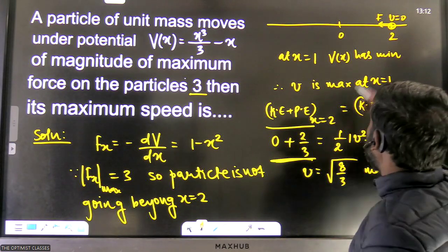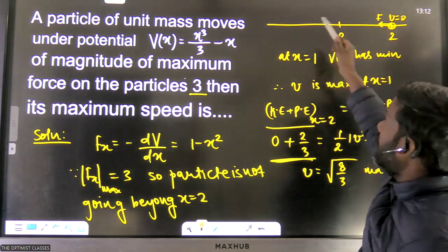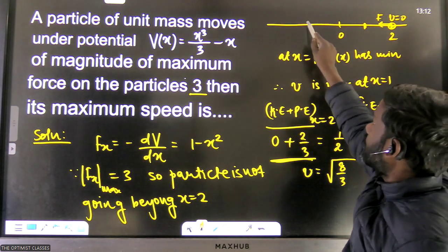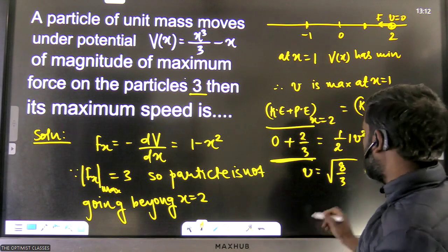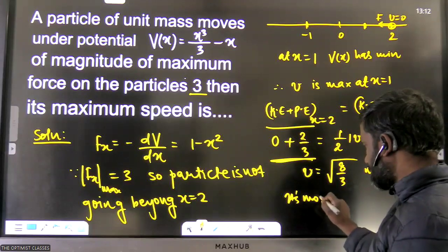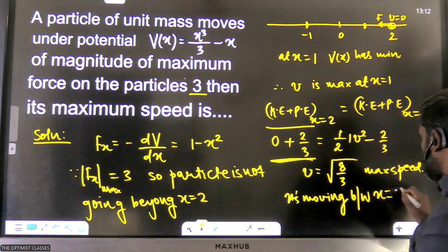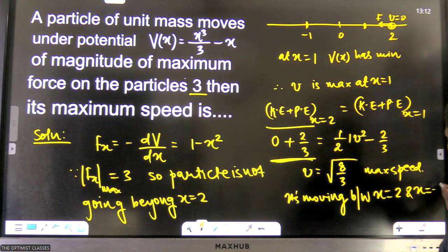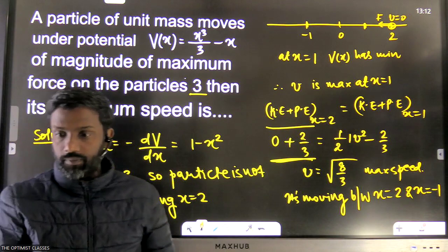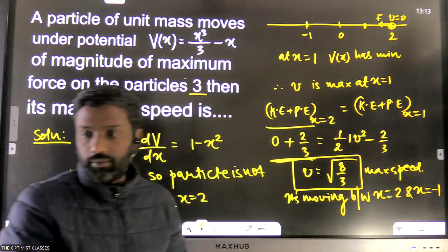Therefore kinetic energy becomes zero at x = −1. The particle starts at x = 2, moves in the negative x direction, reaches maximum speed at x = 1, slows down, and ultimately stops at x = −1. The particle is moving between x = 2 and x = −1. That's the solution — the maximum speed is √(8/3).